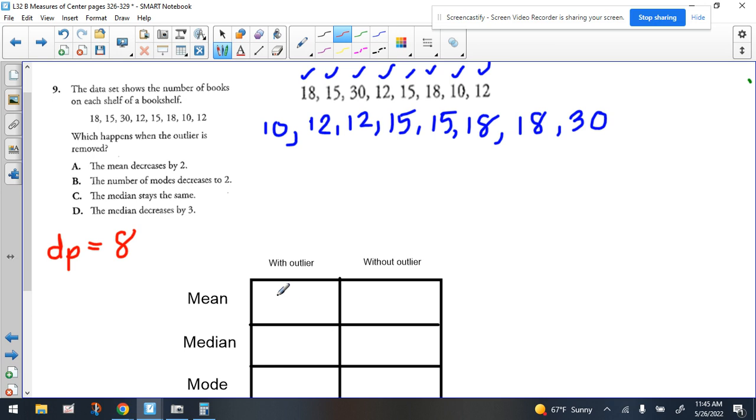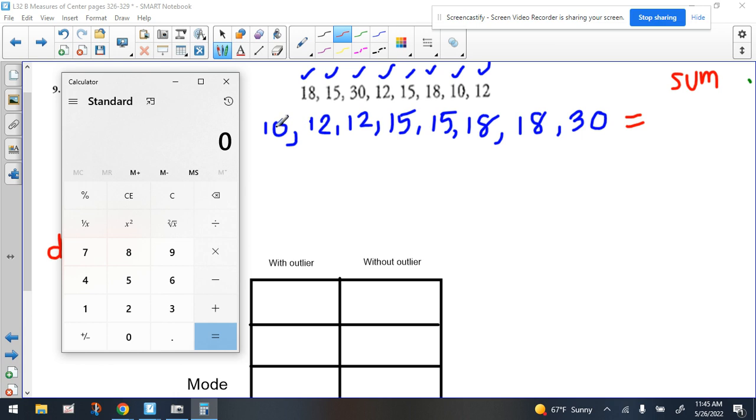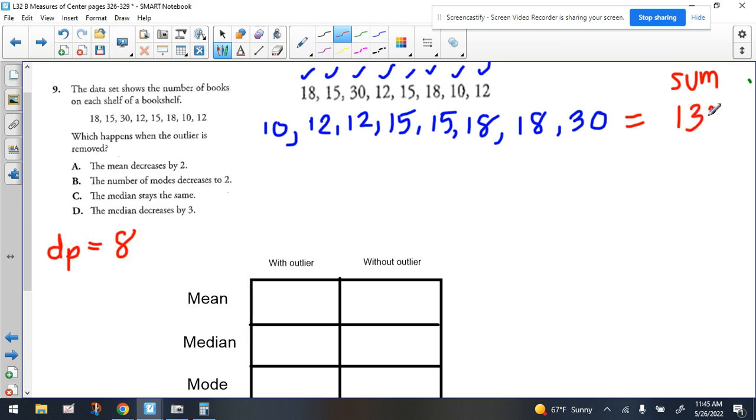All right, so to find the mean, we have to find the sum of all the numbers. So let's do that first, and then we have to divide by how many there are, which in this case would be eight. So let's take out our calculator and add up all the numbers. So I'm going to add them using the black numbers. 18 plus 15 plus 30 plus 12 plus 15 plus 18 plus 10 plus 12, and we get 130. Let's write that number down, 130.